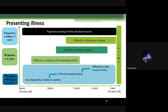Parents noticed the child could not get up from a squatting position once seated, had difficulty climbing stairs, and difficulty lifting heavy objects — especially overhead activities. These symptoms were accompanied by progressive wasting of limbs and facial muscles. This symptomatology has progressed over five years.